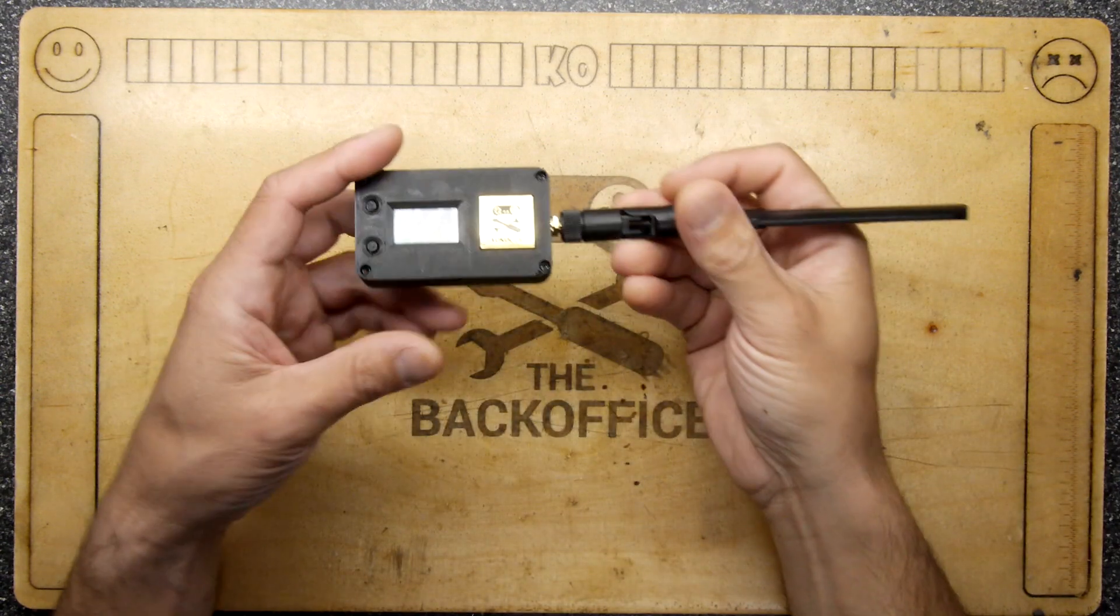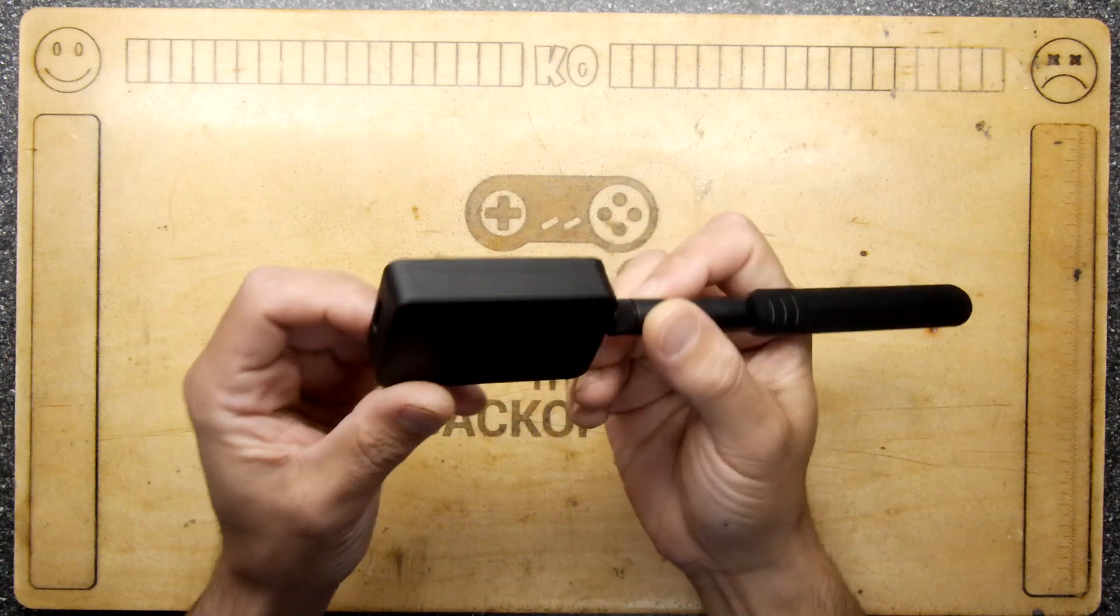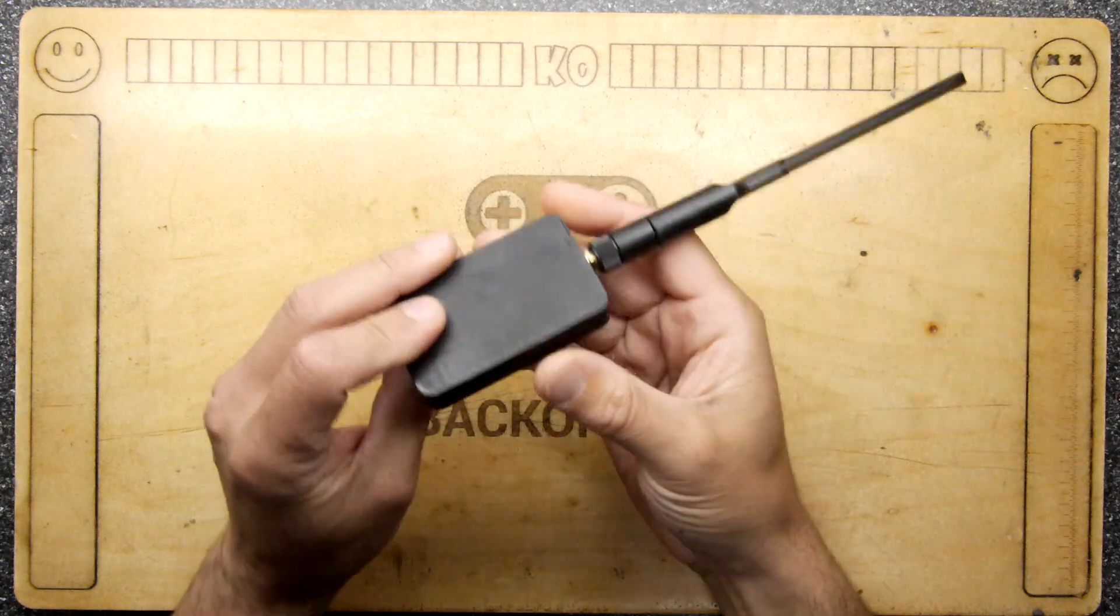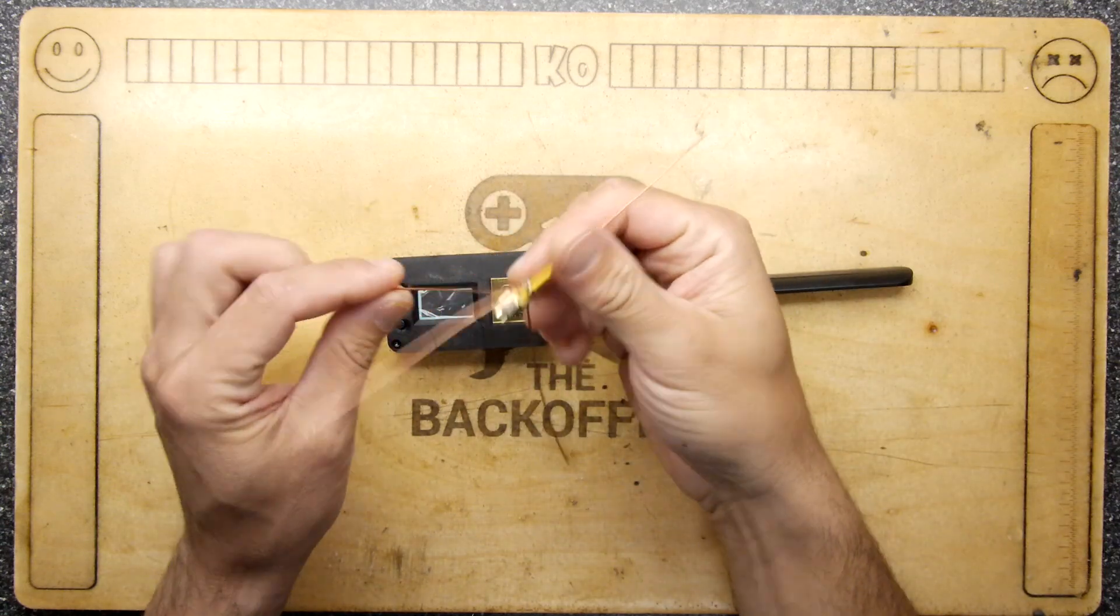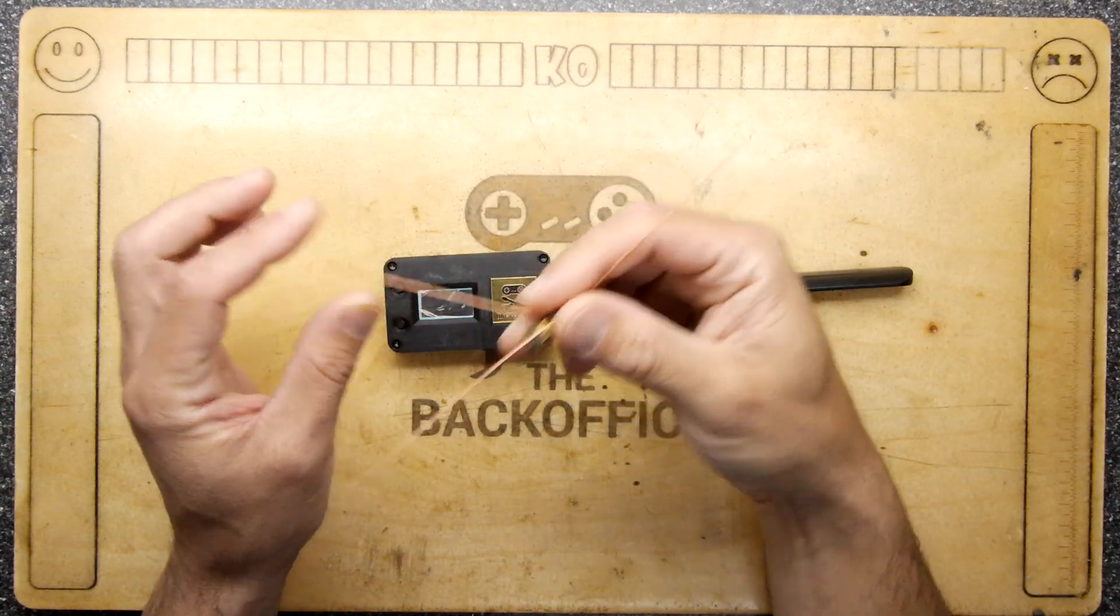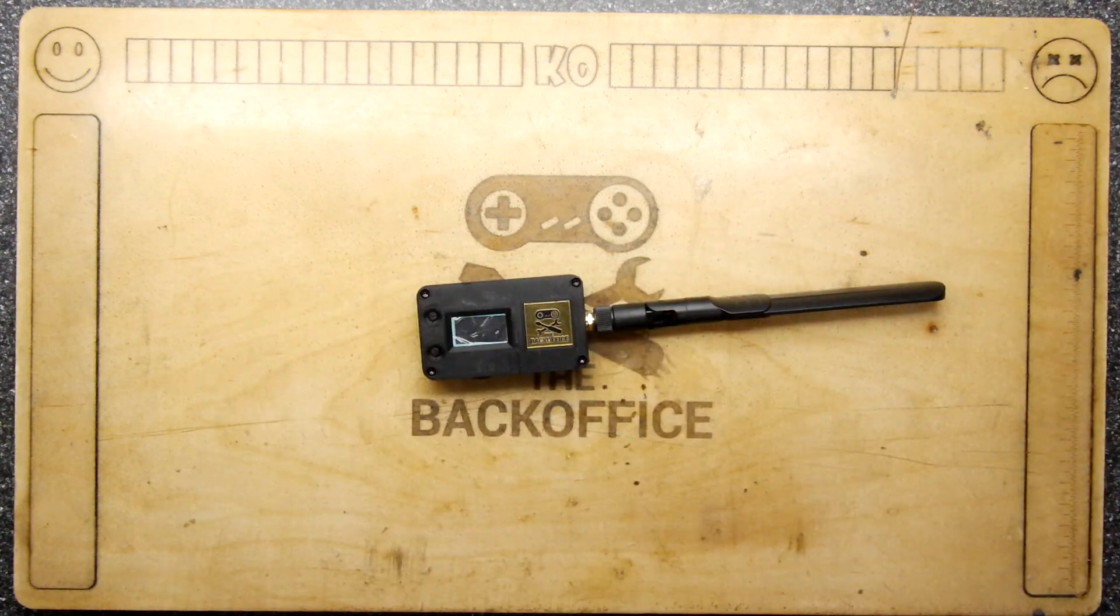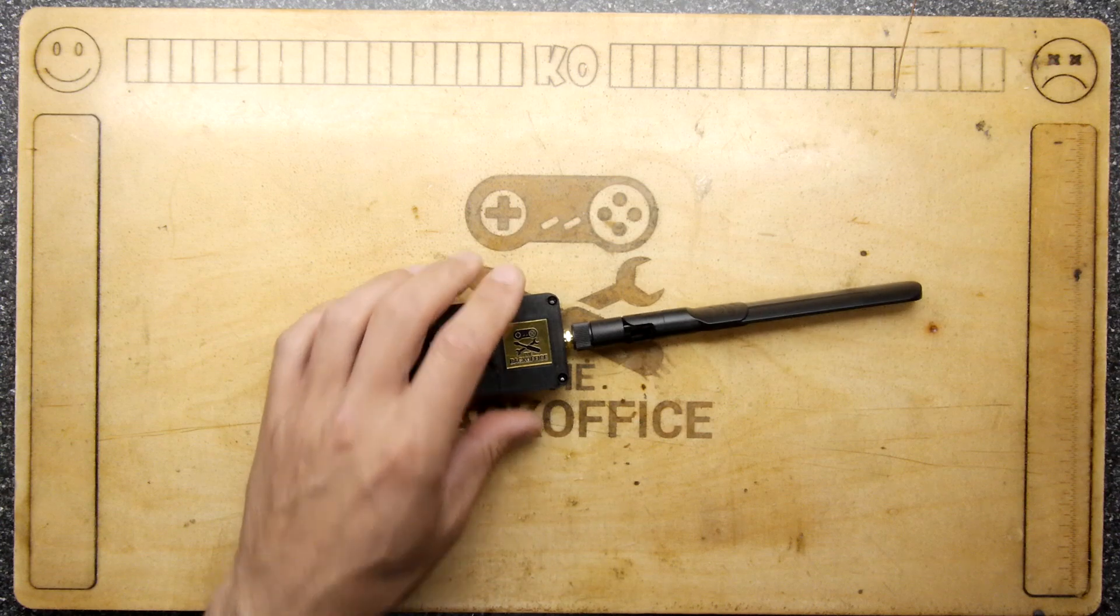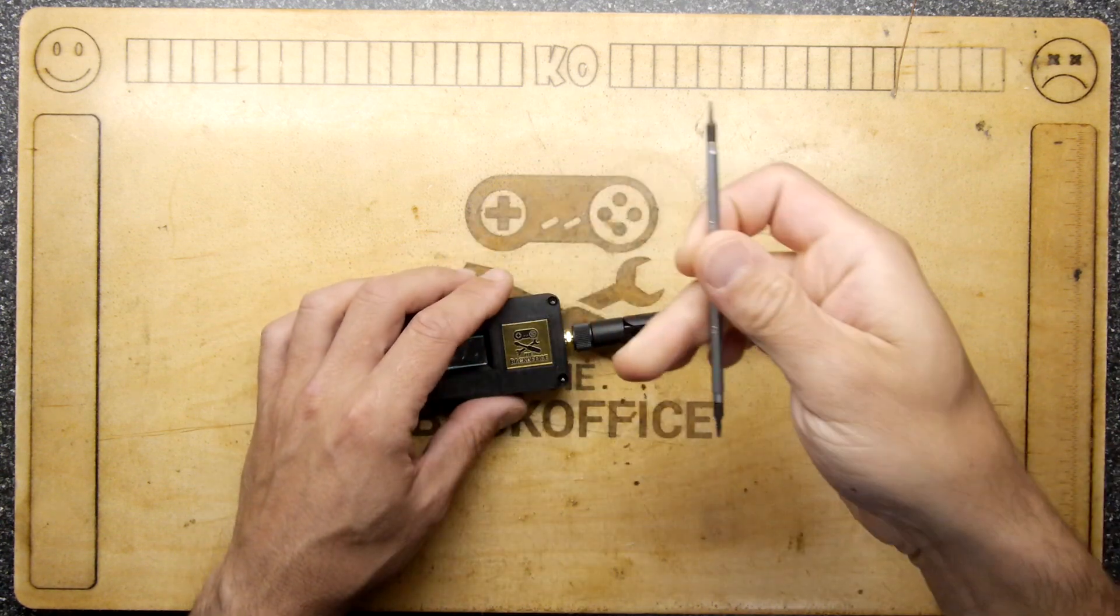You might have caught a previous video where I was playing with these Meshtastic units. This was an enclosure I made to take the unit plus a battery, and then I started making little antennas and getting quite good range. This is the one with the GPS tracker in it.